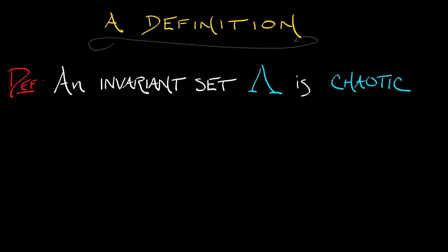Now wait a minute. What do I mean by invariant set? I mean a subset of the dynamical system in which if you start there, you stay there. It is invariant under the dynamics. Okay, invariant set lambda, chaotic.